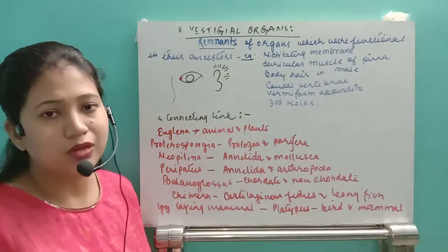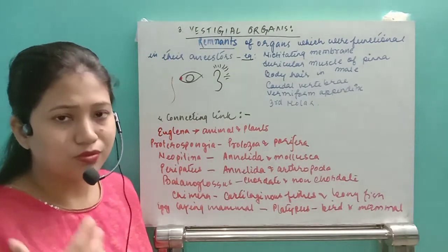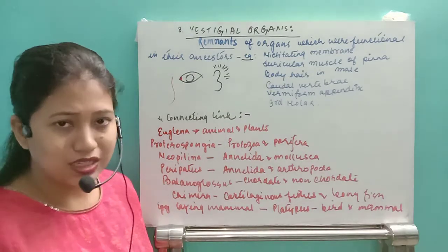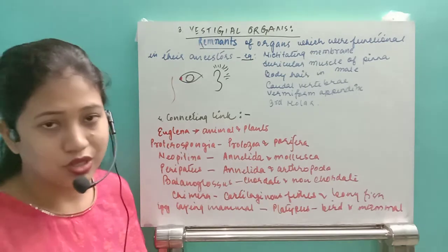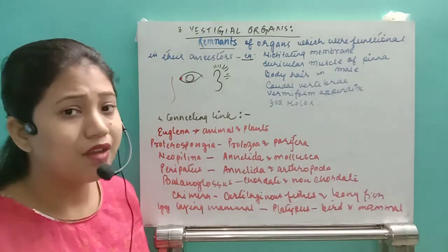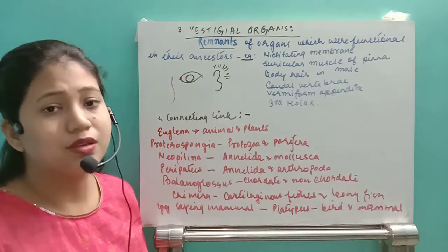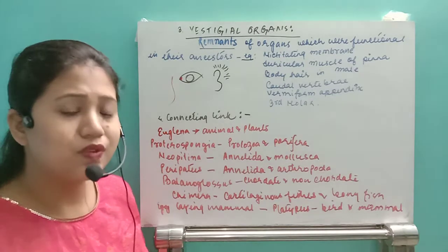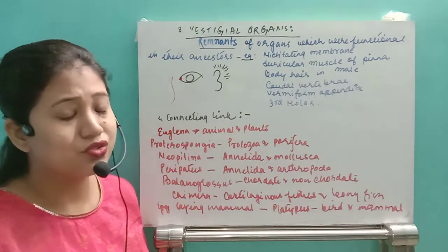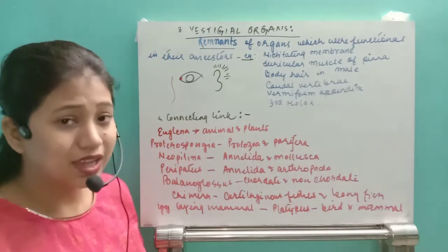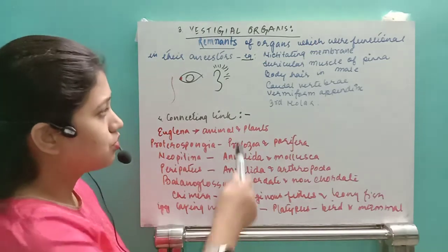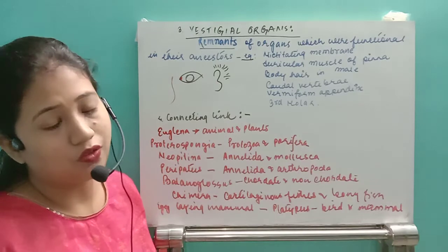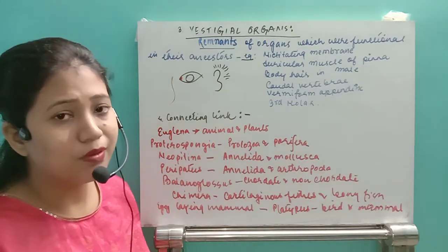The next vestigial organ is the caudal vertebrae. We know that many vertebrates and mammals have long tails — reptiles have tails, and even monkeys have them. In humans, as a vestigial organ, we have caudal vertebrae but the last coccyx bones are fused together.